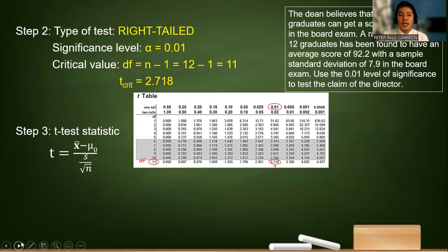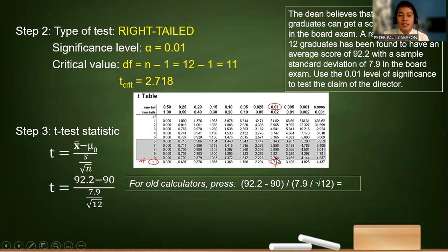Step three. We have to compute for the t-test statistic. So that is x-bar minus μ₀ over the sample standard deviation over the square root of n. So that's 92.2 minus 90 over 7.9 over the square root of 12. This is how you put it when you have old calculators. But if you have new calculators, you can directly input these values. So our answer is 0.96.